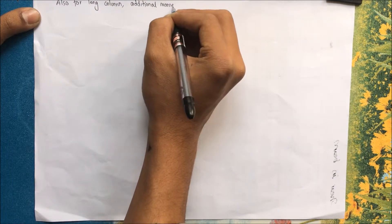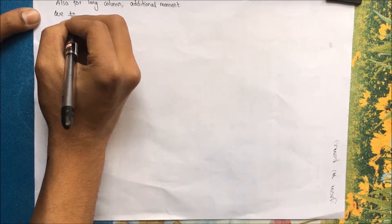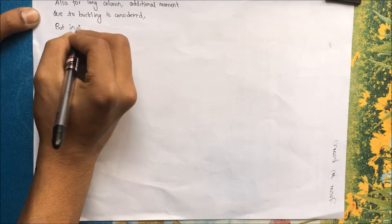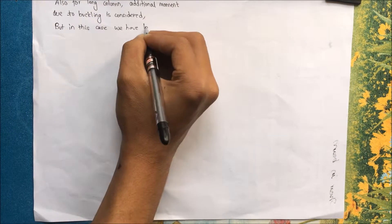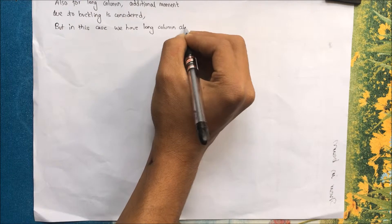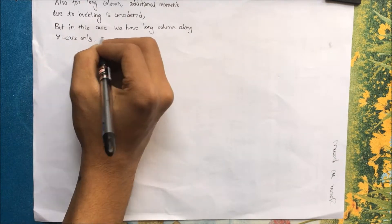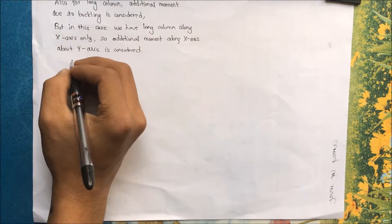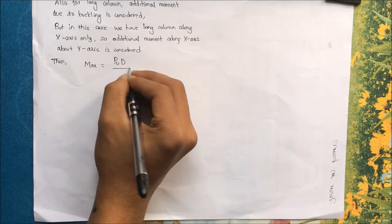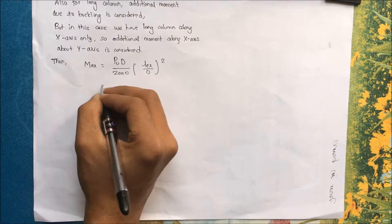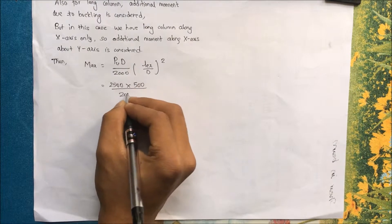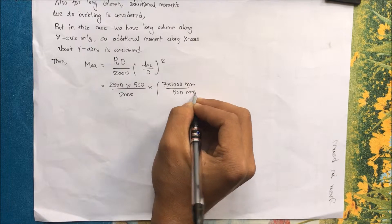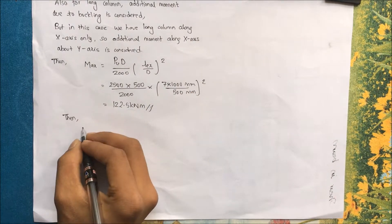For a long column, additional moment due to buckling must be considered. In this case the column is long along the x-axis only, so additional moment about the y-axis is considered. max = Pu × d / 2000 × (lex / d)², substituting values gives max = 122.5 kN·m.